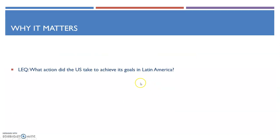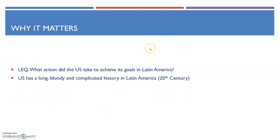So why this matters — what action did the U.S. take to achieve its goals in Latin America? That's our big question for today. The U.S. has a really long, bloody, and complicated history in Latin America during the 20th century. We will work with some countries, overthrow the governments of others, depending on their political beliefs, economic systems, or just depending on what our country needs politically or economically. Cuba is going to get involved with the Cold War, and that almost gets us into World War III, considering Cuba will eventually embrace the Soviet bloc when Castro comes to power.